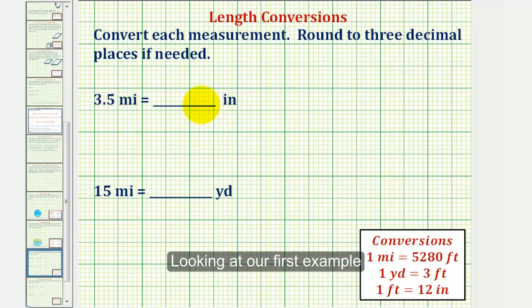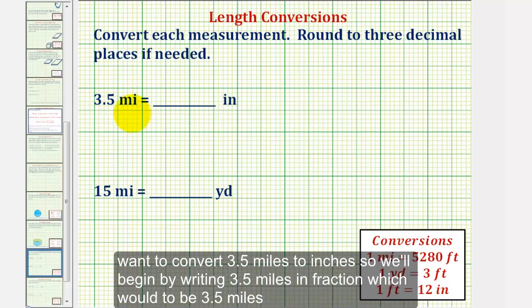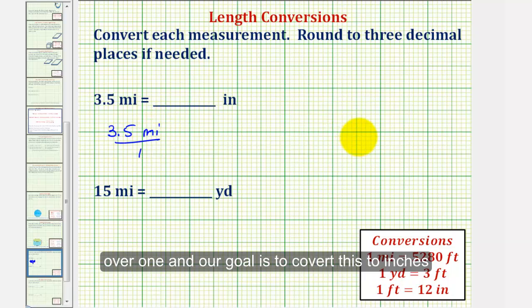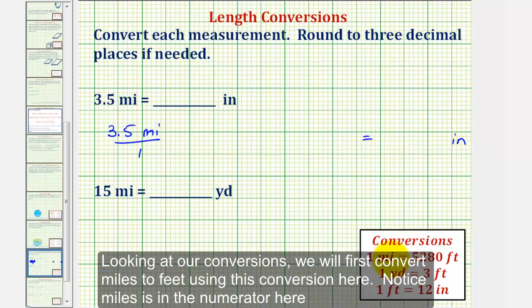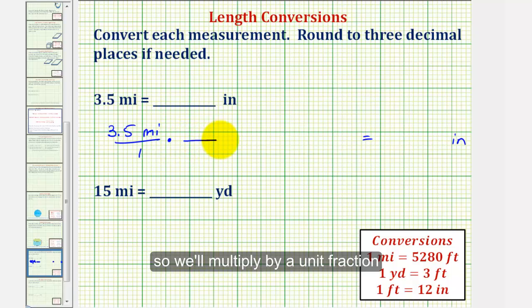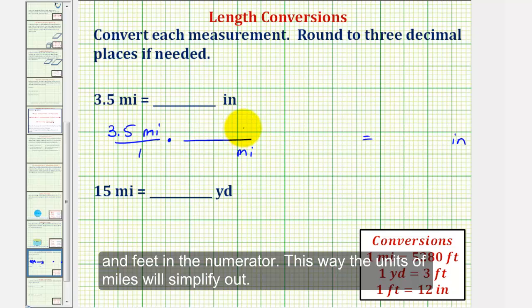Looking at our first example, we want to convert 3.5 miles to inches. We'll begin by writing 3.5 miles in fraction form, which would be 3.5 miles over one, and our goal is to convert this to inches. Looking at our conversions, we'll first convert miles to feet. Notice miles is in the numerator, so we're going to multiply by a unit fraction where we'll have miles in the denominator and feet in the numerator.